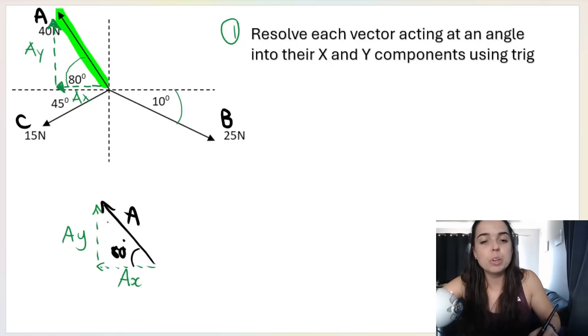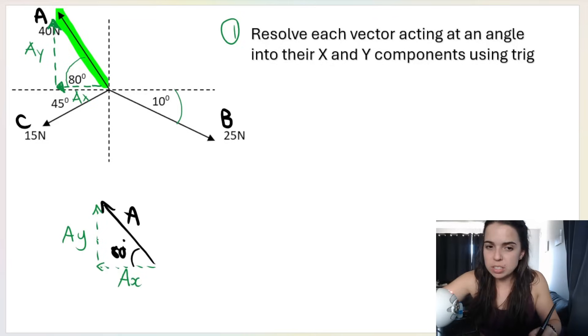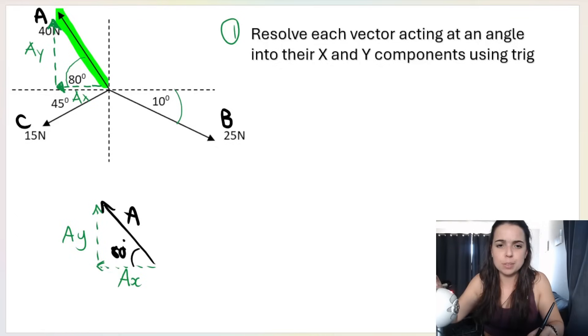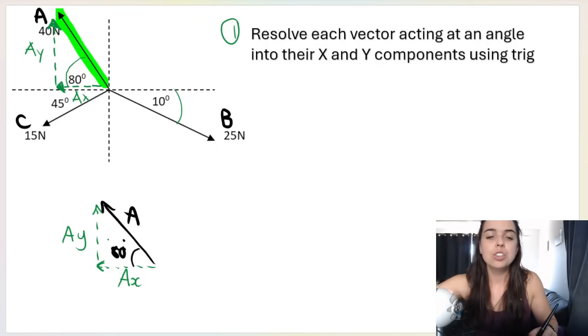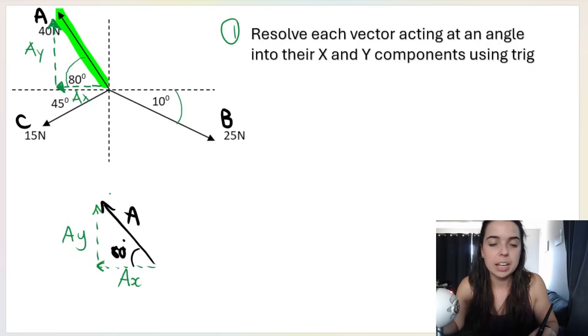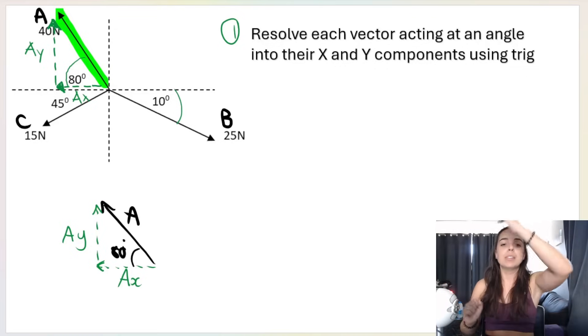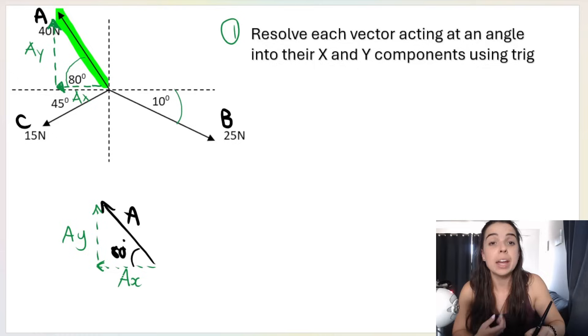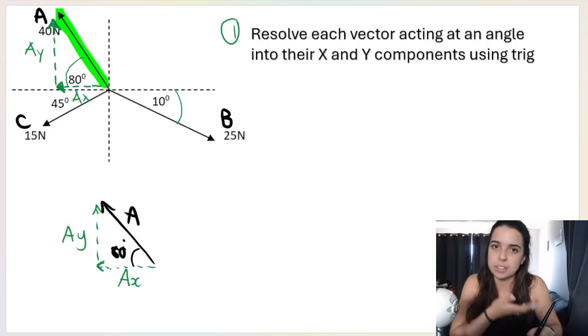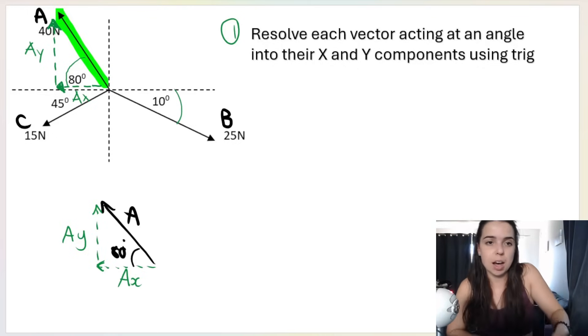If you forget which way the component should be pointing — should A-x be pointing to the left or to the right? — just look at which way A is pointing. A is pointing up and to the left, so A-x must be pointing to the left and A-y must be pointing up.